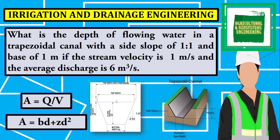Welcome to Agricultural and Biosystems Engineering Tutorials. I will be solving this problem under irrigation and drainage engineering. What is the depth of flowing water in a trapezoidal canal with a side slope of 1 to 1 and base of 1 meter, if the stream velocity is 1 meter per second and the average discharge is 6 cubic meters per second.